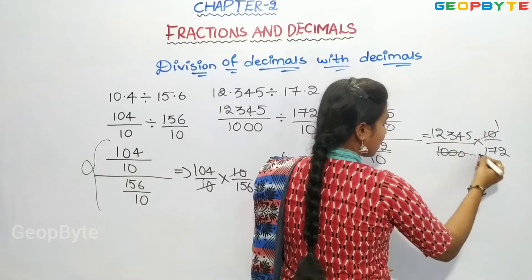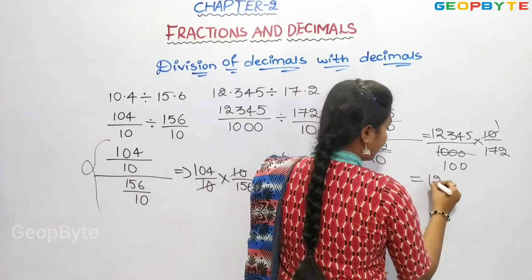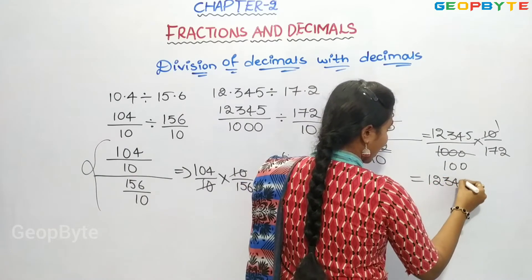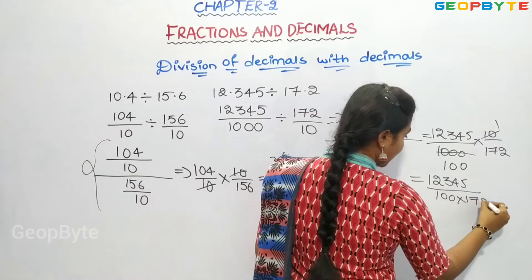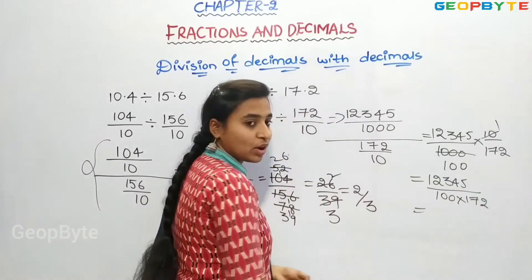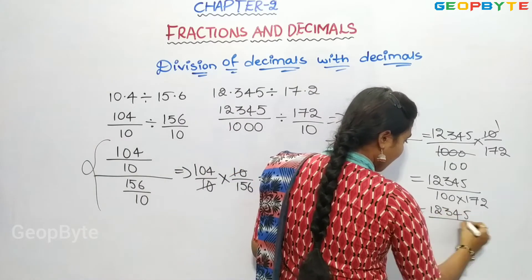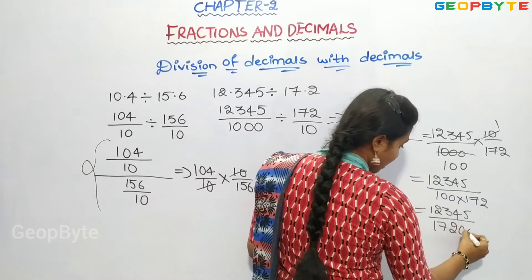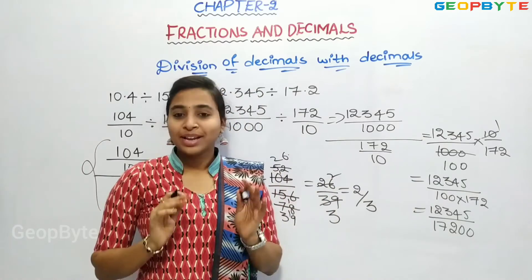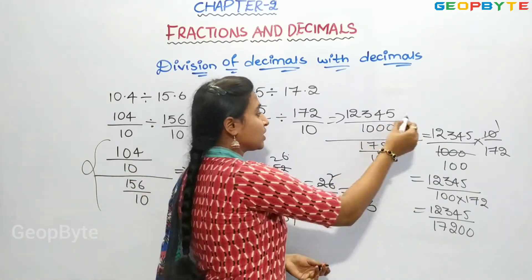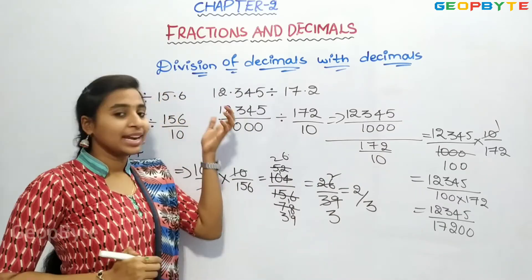Now 10 ones are 10 hundredths. This becomes 12345 by 17200. If we further resolve this we will get a value in fraction. So this is the procedure to solve two decimal numbers by division.